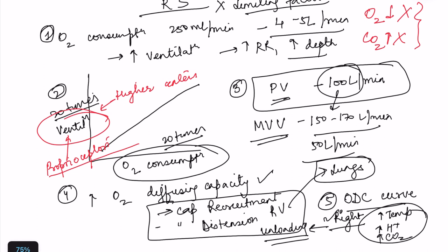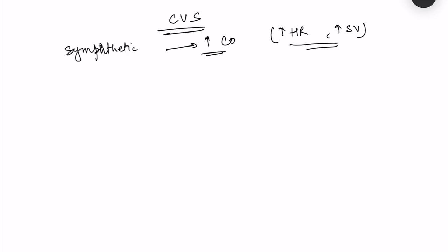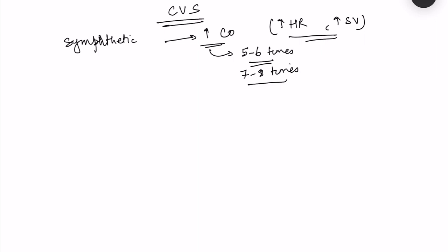Now, the cardiovascular adjustments during exercise: because of increased sympathetic activity, cardiac output increases due to increases in both heart rate and stroke volume. Cardiac output can increase up to five to six times during exercise, and in marathon runners it can increase up to seven to eight times. In people who exercise long-term, hypertrophy of the heart occurs, increasing cardiac muscle mass, so the heart pumps with greater power, leading to increased stroke volume.